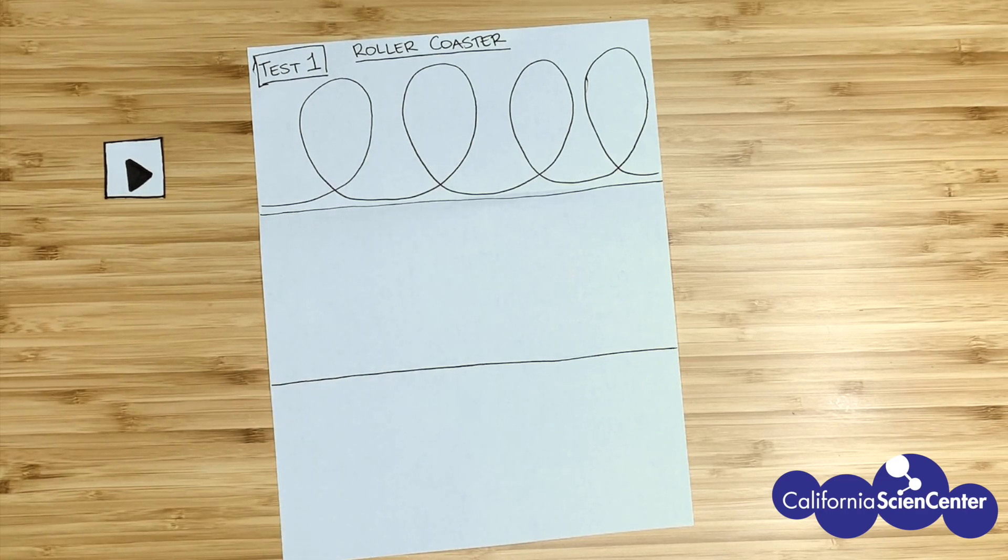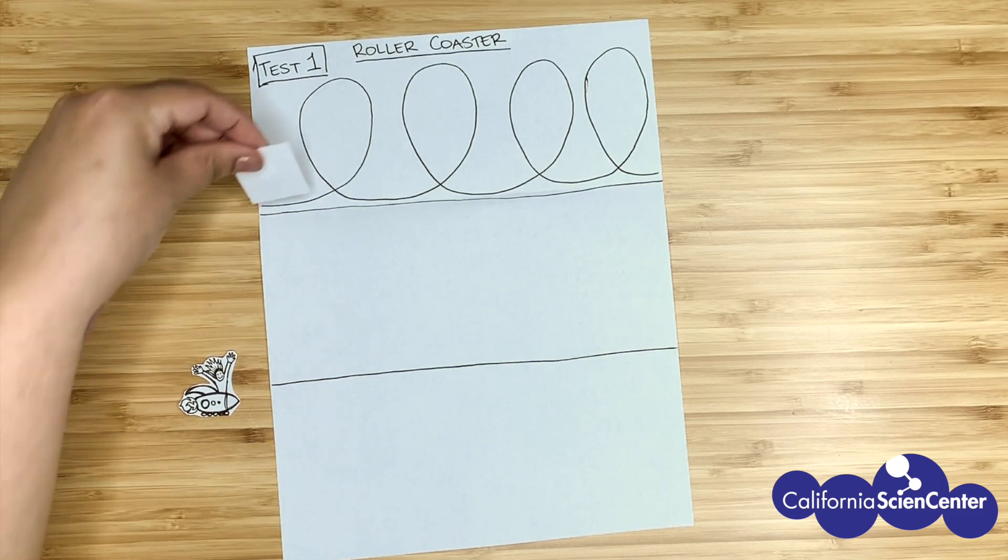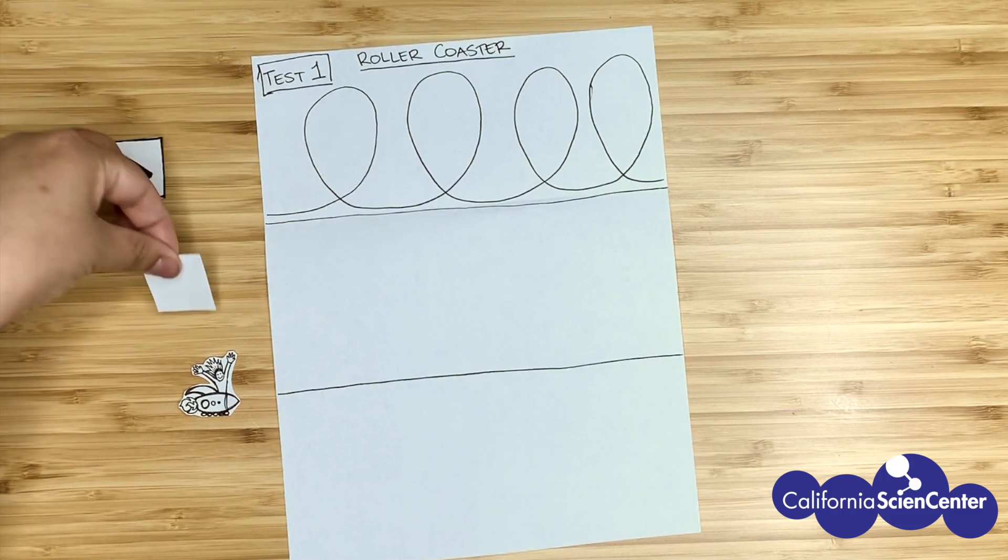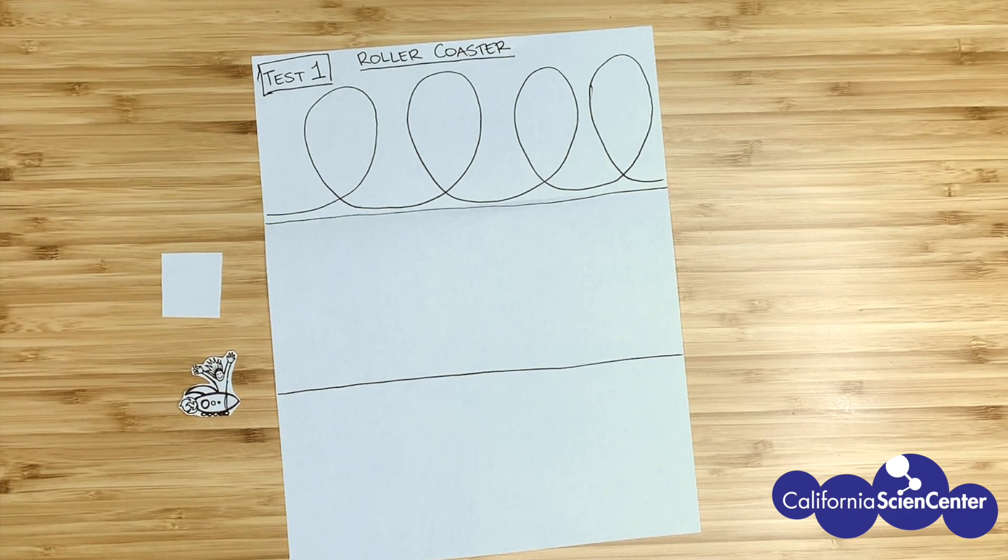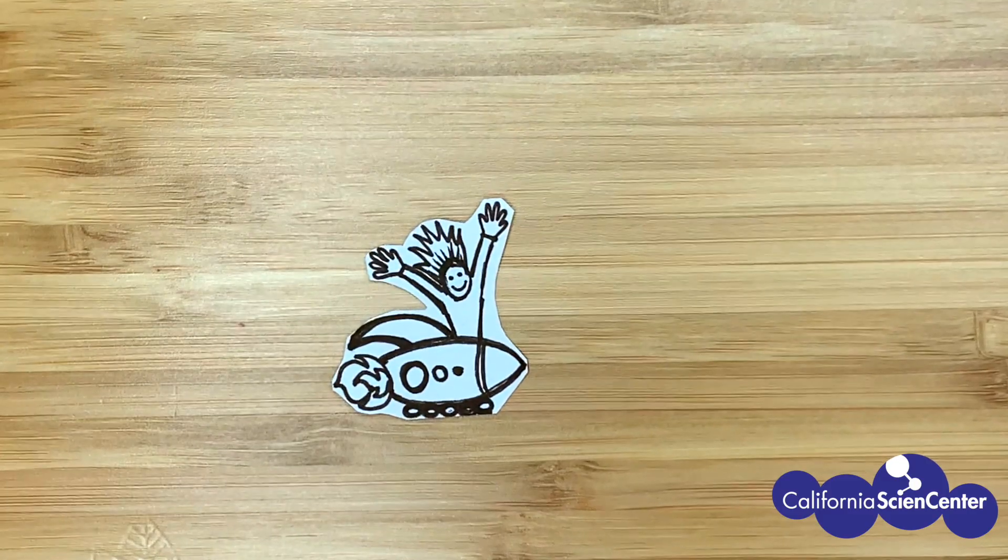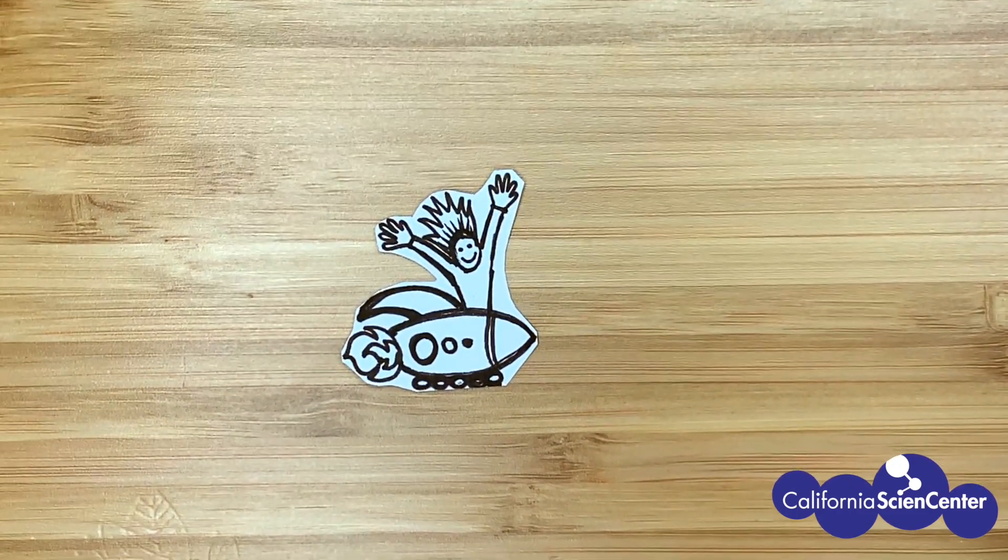In order for us to test our prototypes, we need some help. So with a piece of scratch paper, you're going to create a fungineer that will help us test our prototypes. Place the scratch paper onto the prototype to make sure it fits. Fungineer reporting for duty! Ready to test your prototypes!